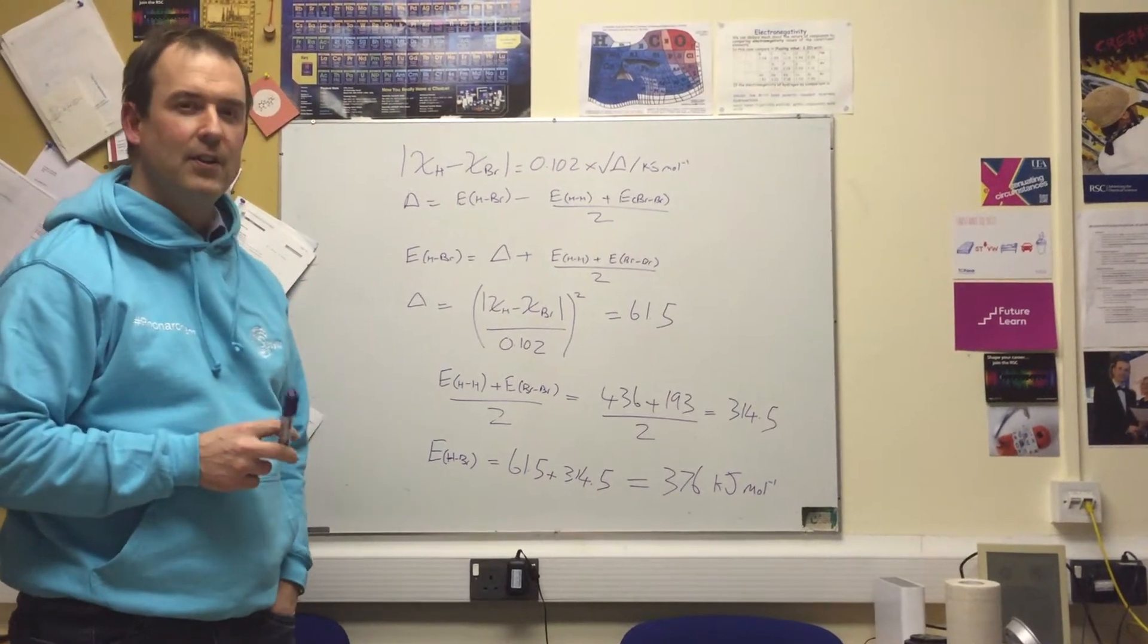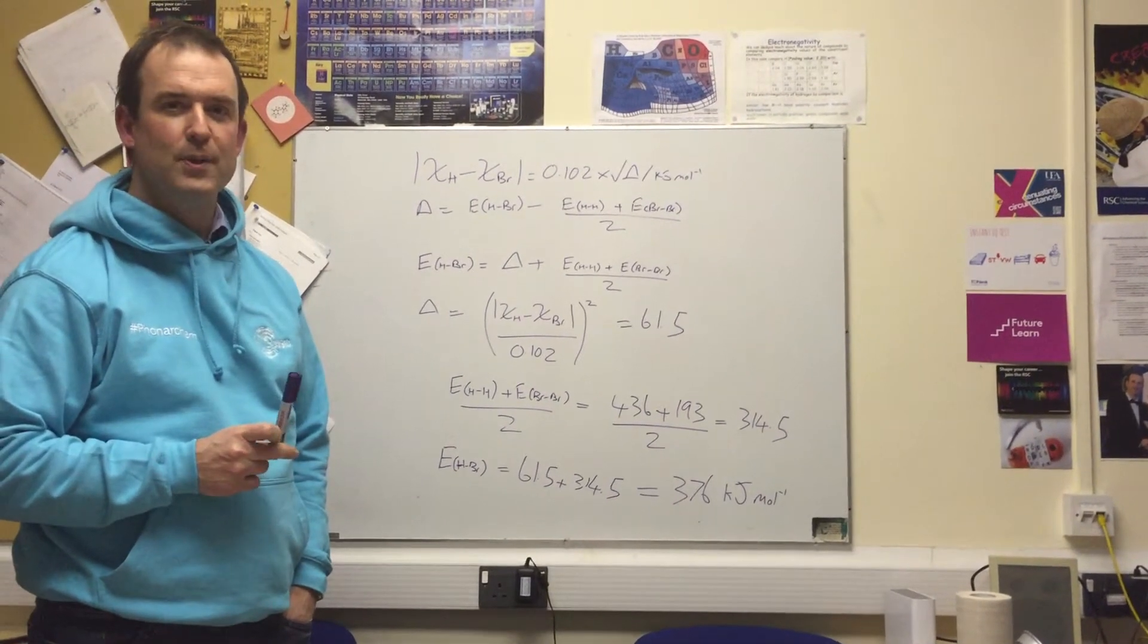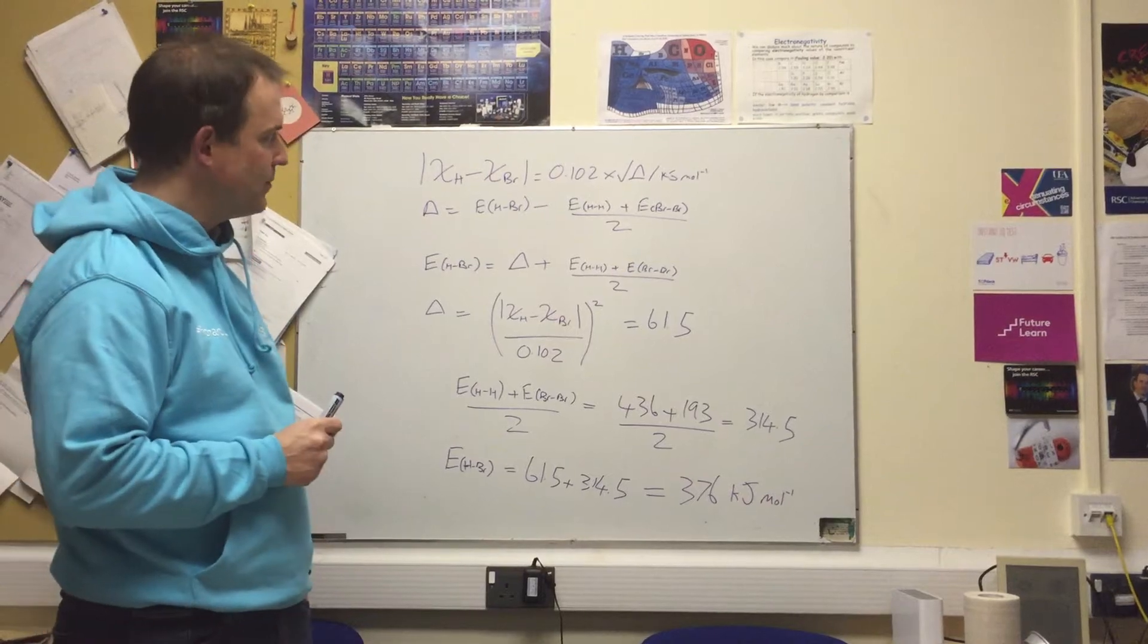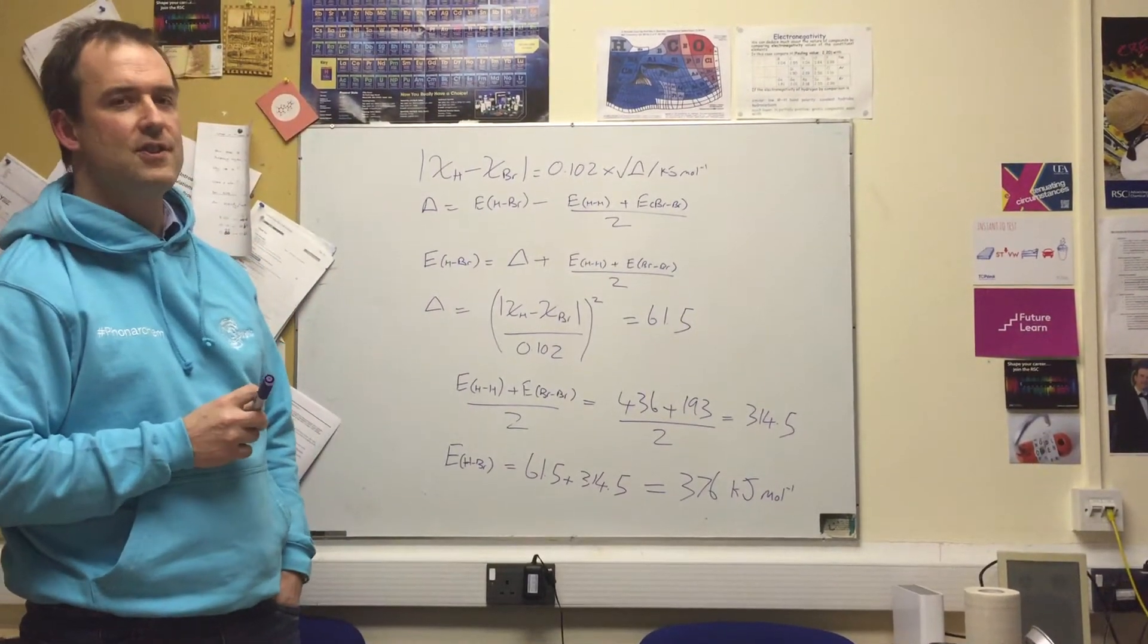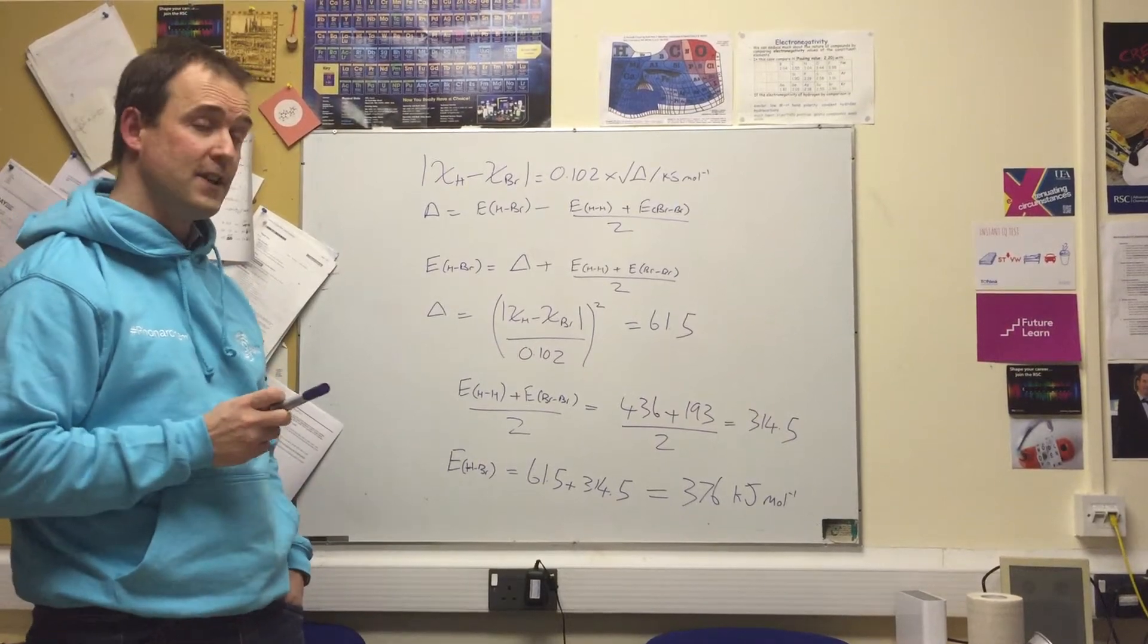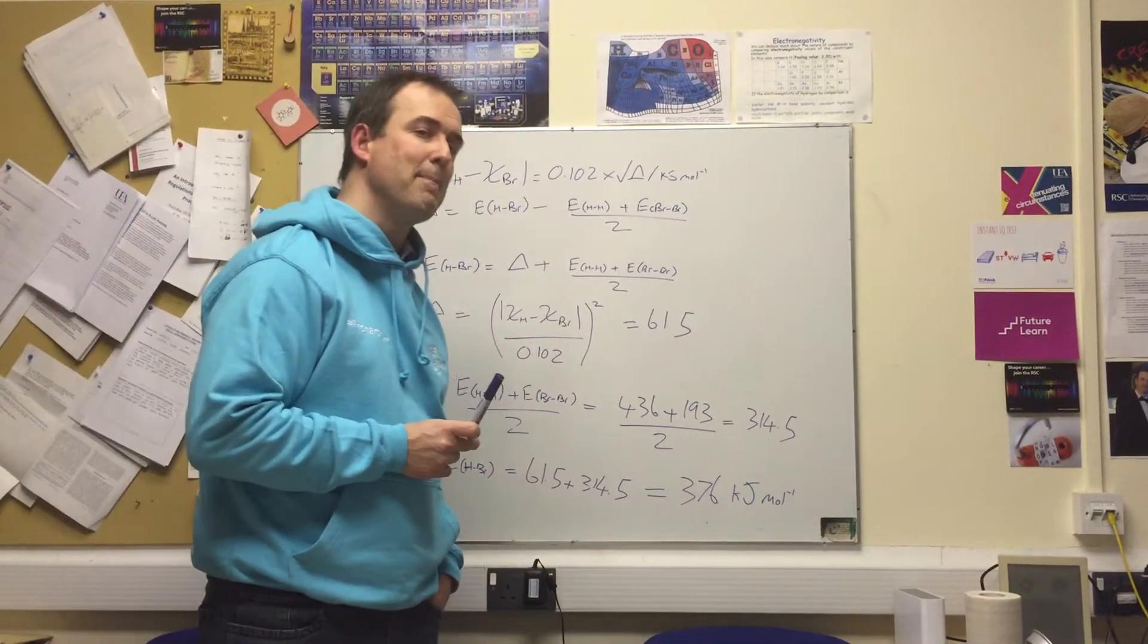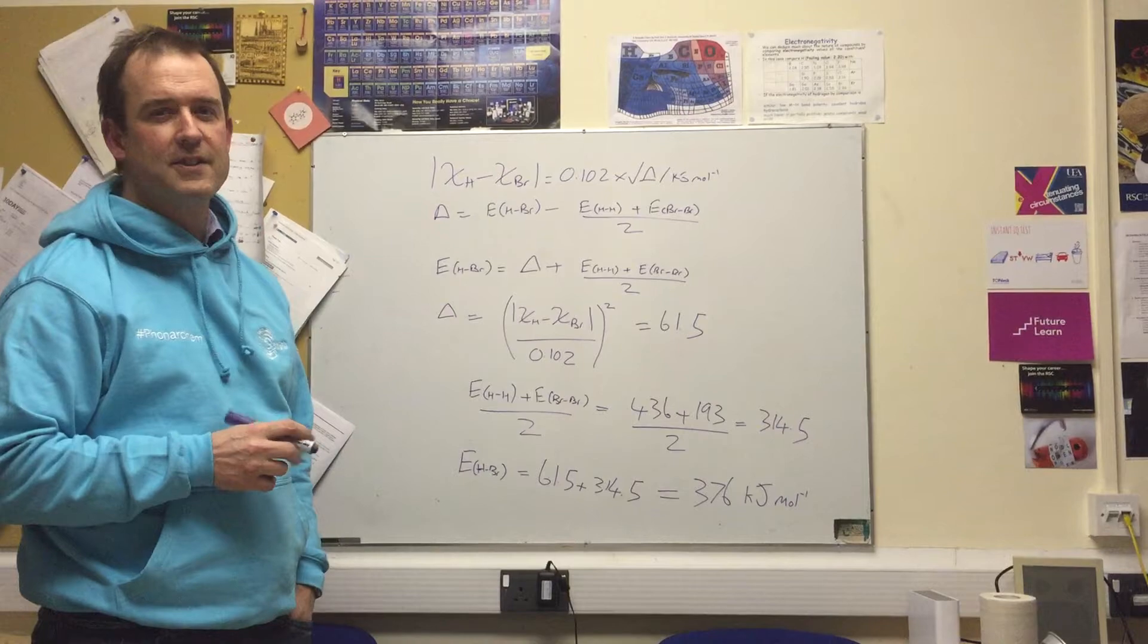An explanation of how to use Pauling's rule to explain bond dissociation energies, which is interesting because Pauling used bond dissociation energies to come up with the electronegativities in the first place. So this is doing it backwards, but it is essentially an exercise in algebra.